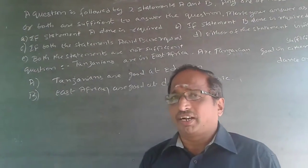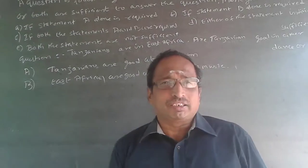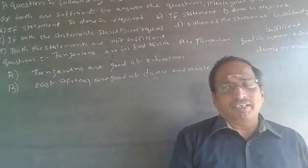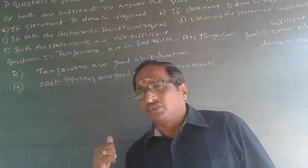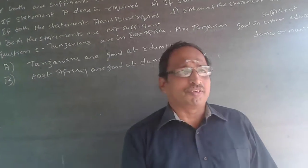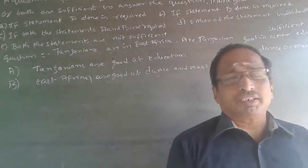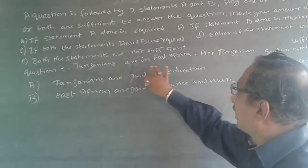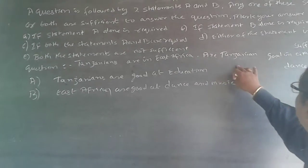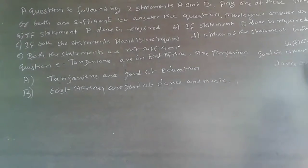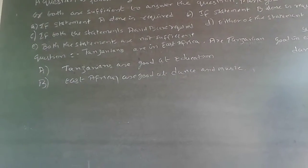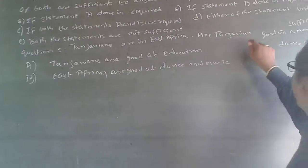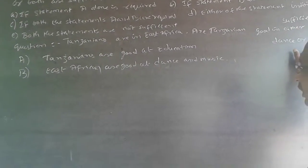Data sufficiency questions are normally easy, but they can sometimes be confusing. This question is one of the confusing ones. Tanzanians are in East Africa — are Tanzanians good in either education, dance, and music? To answer this question, you need to know whether the given conditions are required or not.